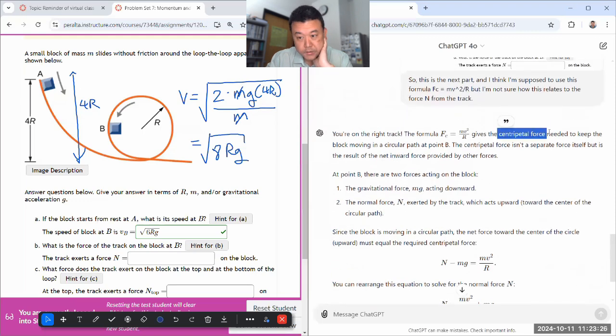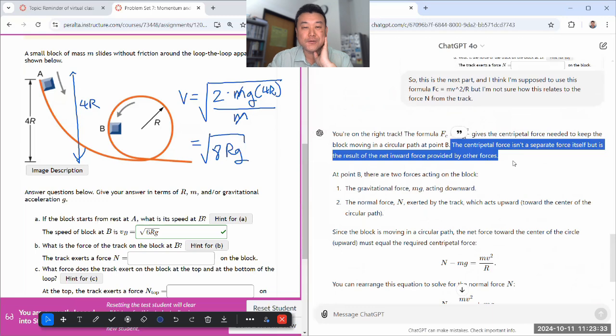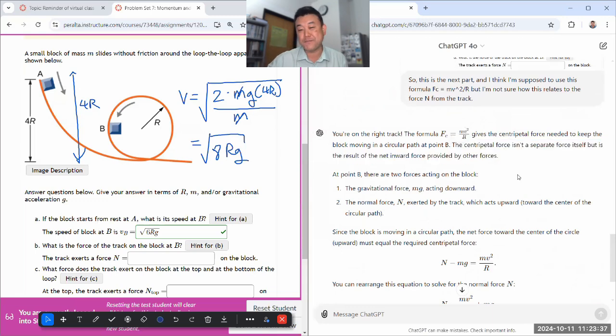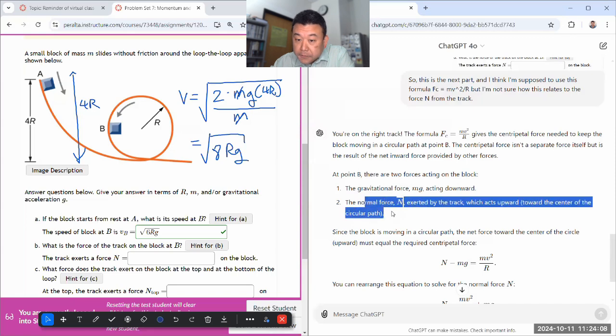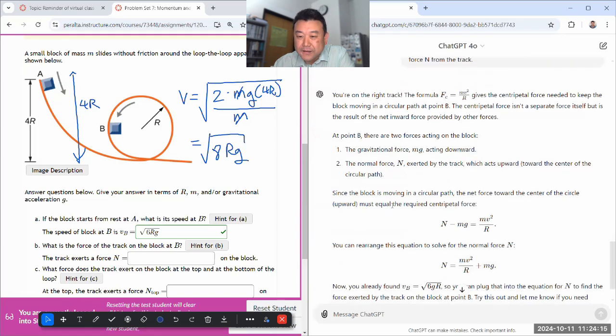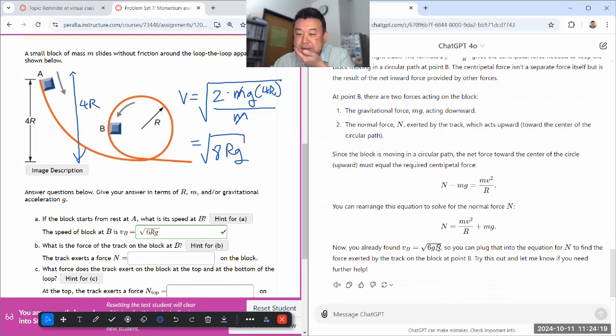Hopefully ChatGPT will explain the formula is a centripetal force and the force from the track is normal force provides the centripetal force. Formula gives the centripetal force, right? It's not a separate force itself. That's great. I think I went over this with most of you during one of the lab sessions. And it's something for you to remember when you're drawing free body diagram. By the way, drawing free body diagram is the one thing that ChatGPT still can't do.